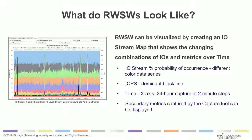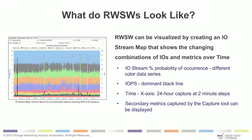You can see on screen now a visualization of a real-world software workload. We can show this by creating an IO stream map, which shows the changing combinations of IOs and methods over time. You'll see this live in the demo in about five minutes. You can measure at any time in the capture the IO stream probability of occurrence in the different colored data series. There's a sharp black line on the left side where a specific IO was done for a short period that really overwhelms the rest of the system — likely a 2AM backup.